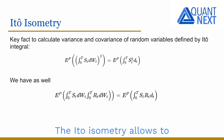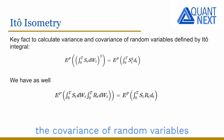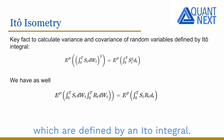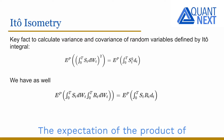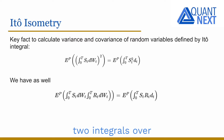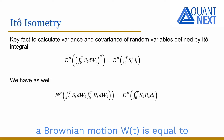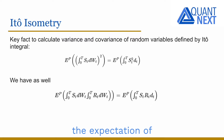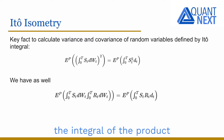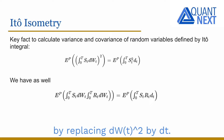The Ito isometry allows us to calculate the variance and the covariance of random variables which are defined by an Ito integral. The expectation of the product of two integrals over a Brownian motion W_t is equal to the expectation of the integral of the product, by replacing the square of dW_t by dt.